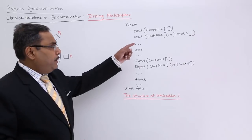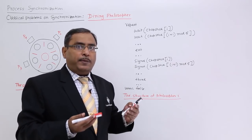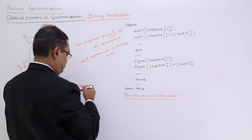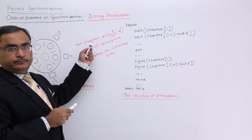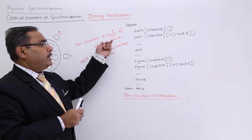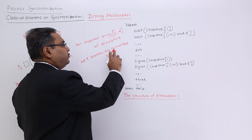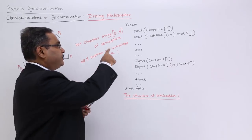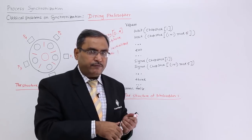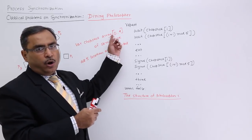This is the Dining Philosophers algorithm. We have one chopstick array — chopstick is an array with locations 0 to 4, meaning 5 locations. Each location holds a semaphore, and all 5 locations are initialized with 1. That is the value with which all locations are initialized. Each location contains a semaphore, and the ith chopstick has the respective semaphore value at the ith location of the chopstick array.